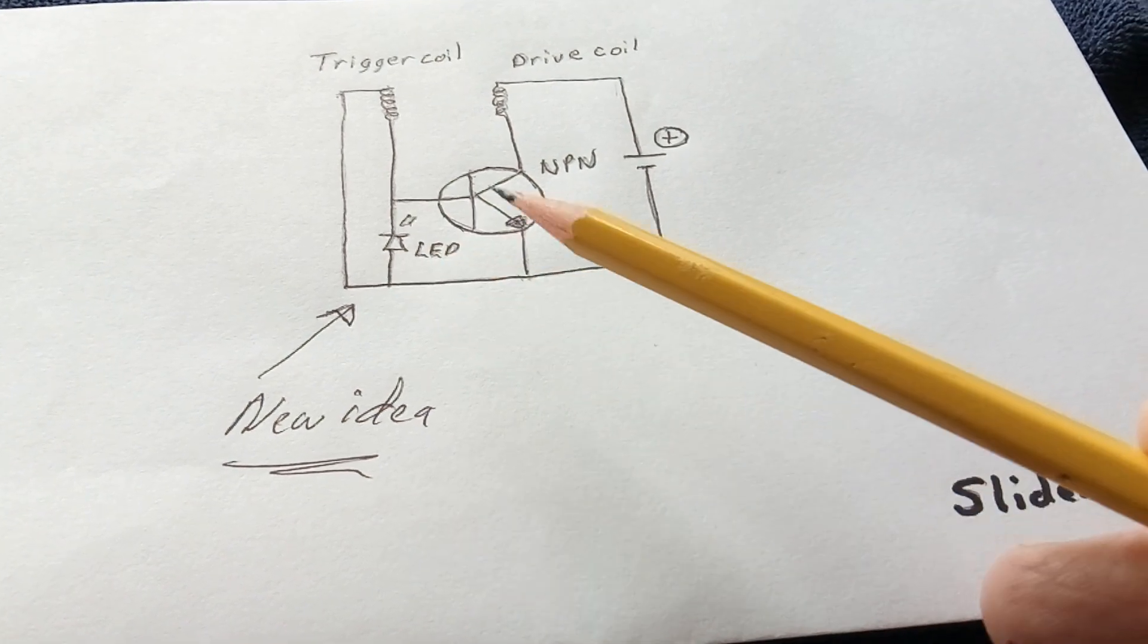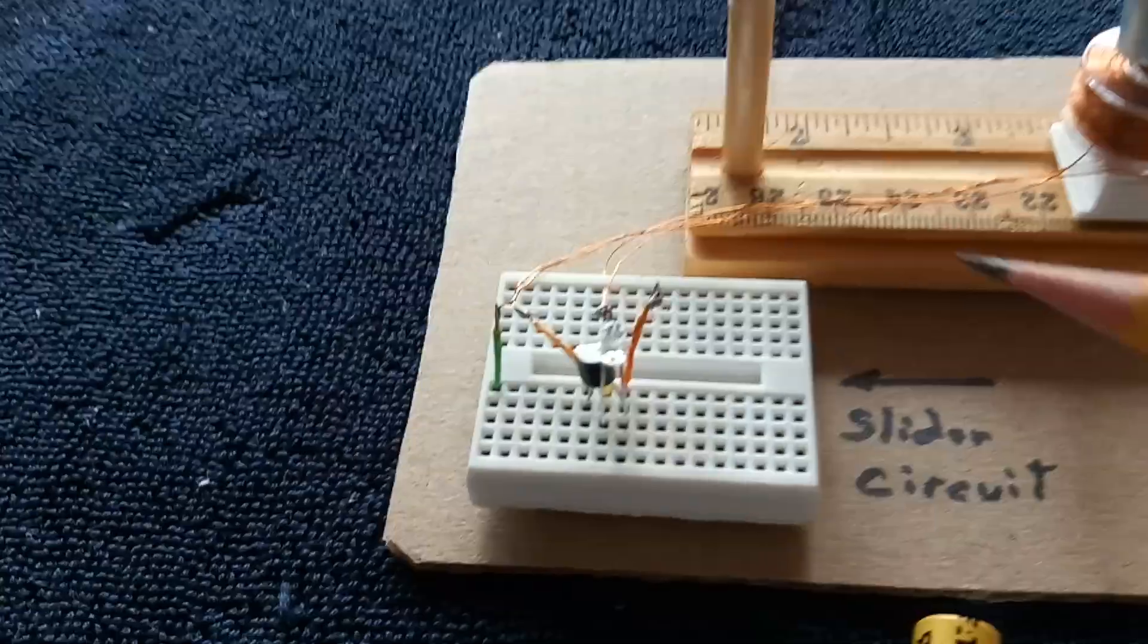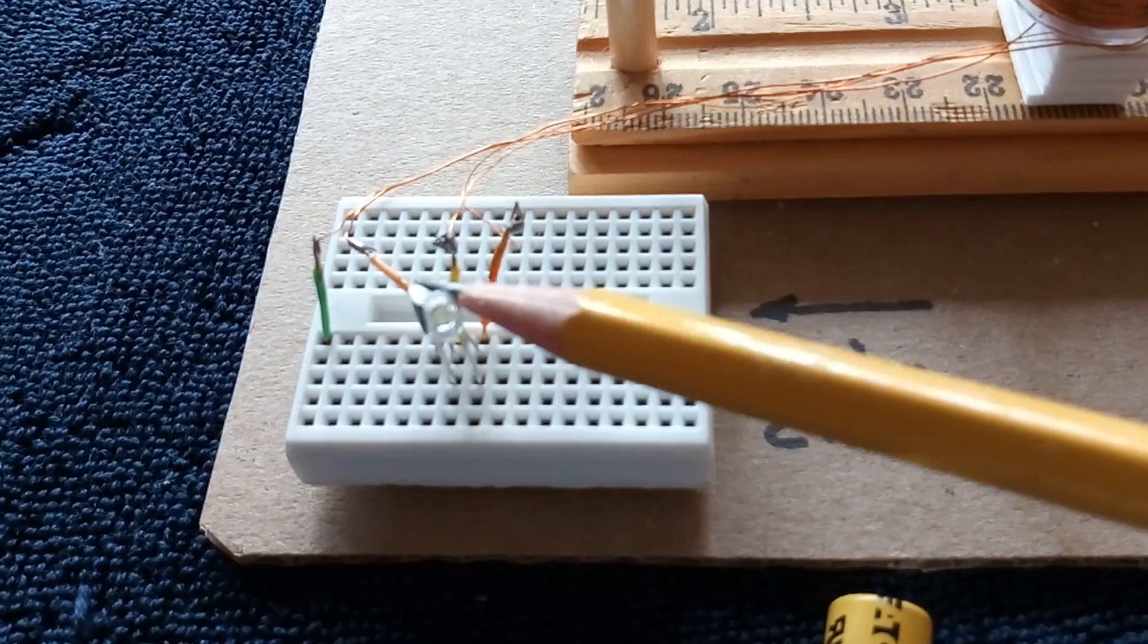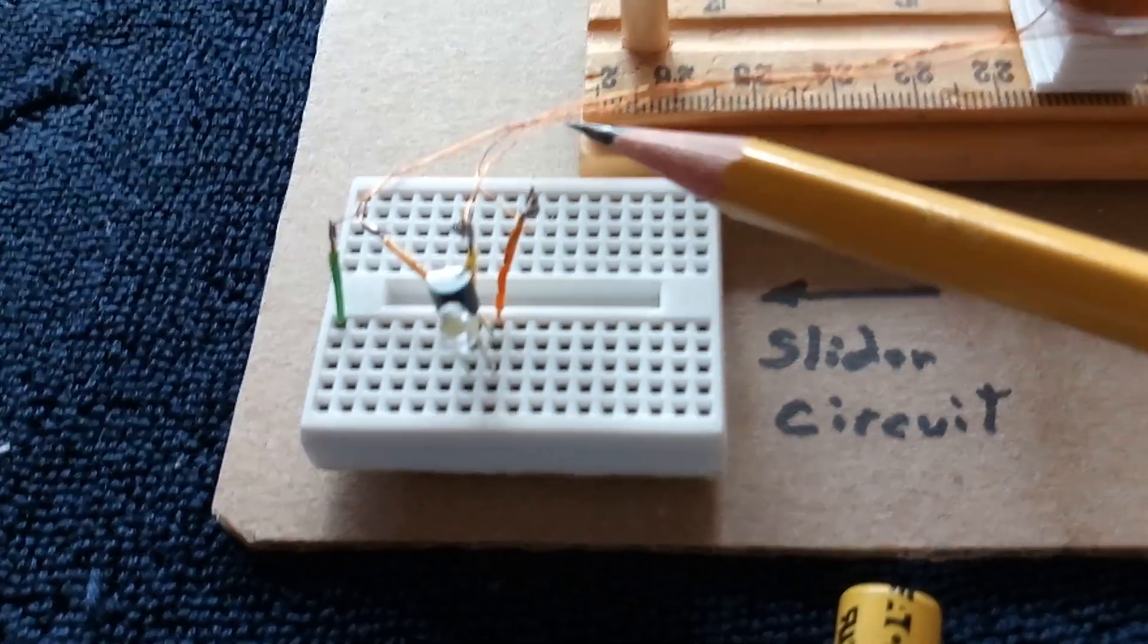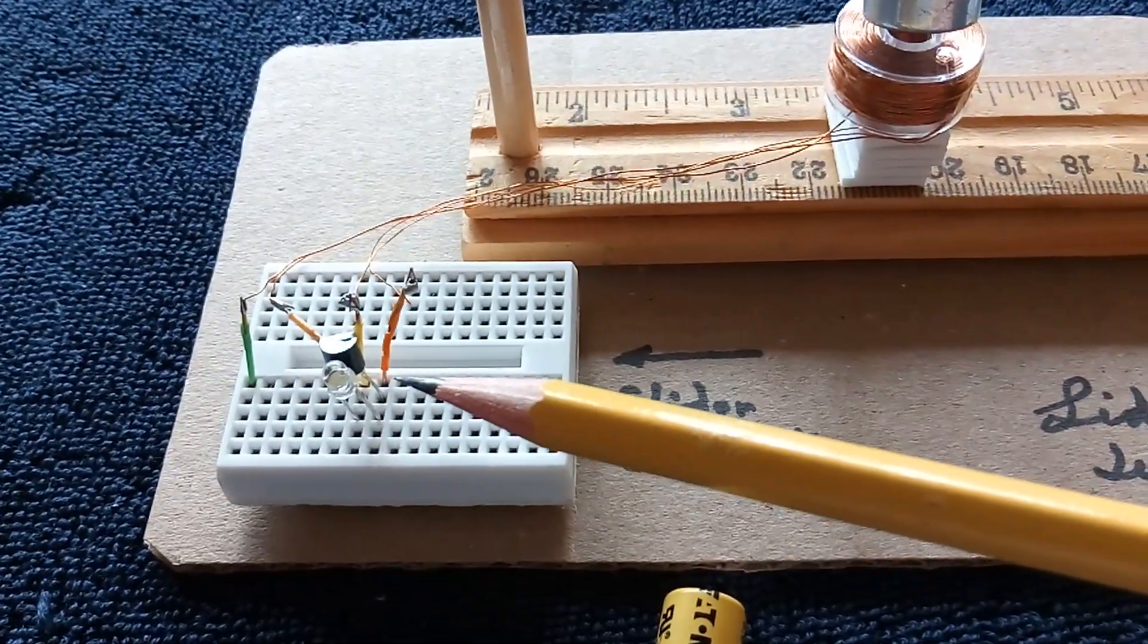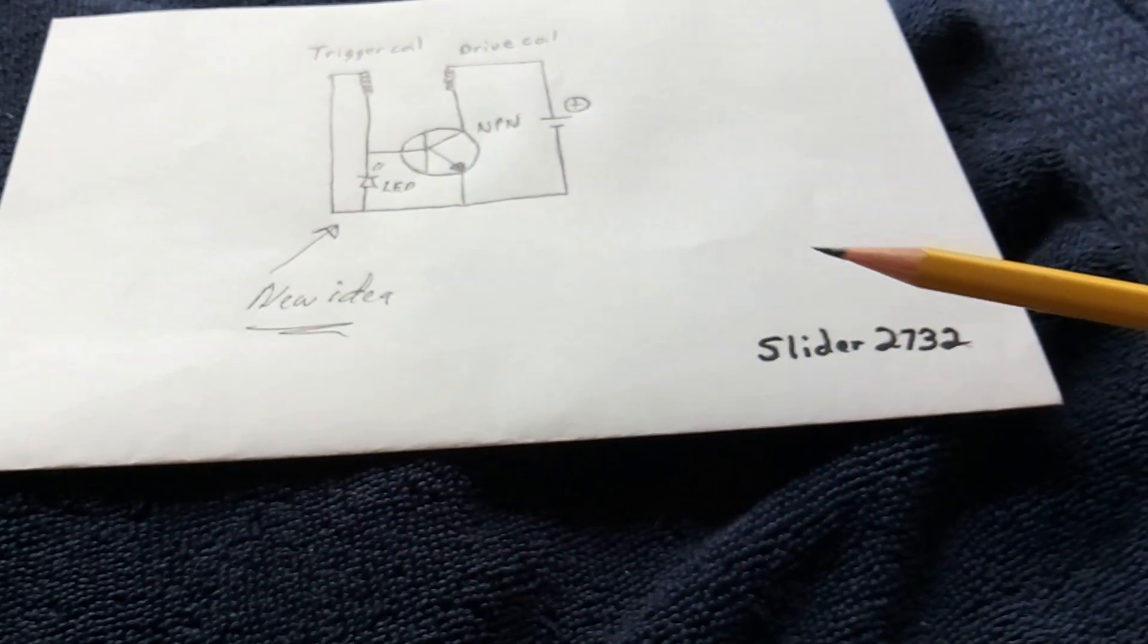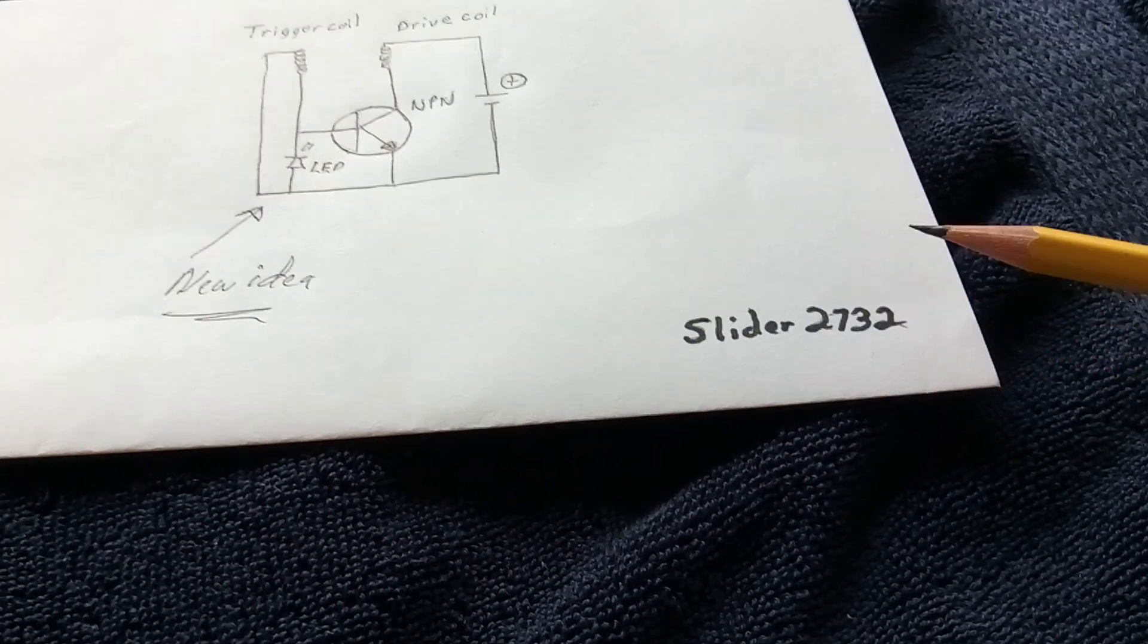But this was the genius: he exchanged the diode for an LED. So you have an indicator light, and I just thought that was the neatest thing. Plus, when the thing goes into the self oscillation, you can see it.